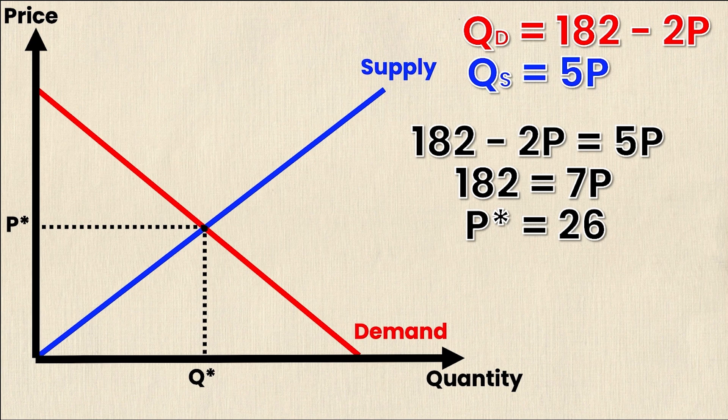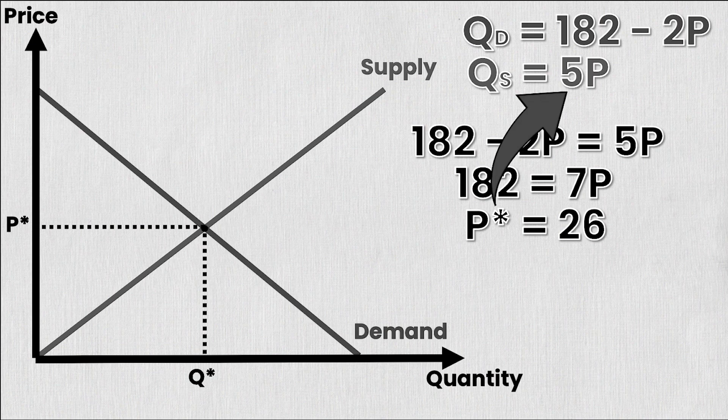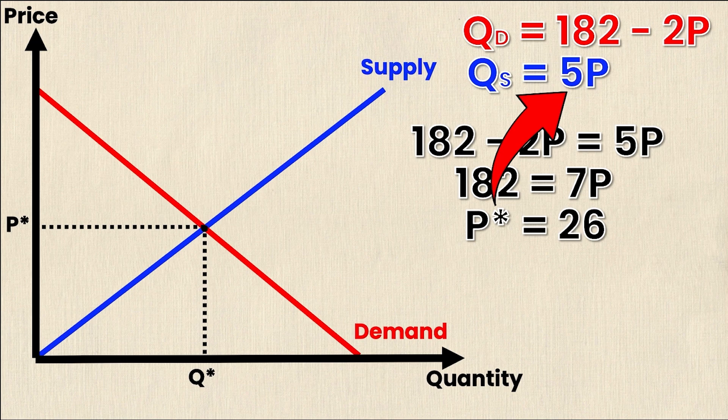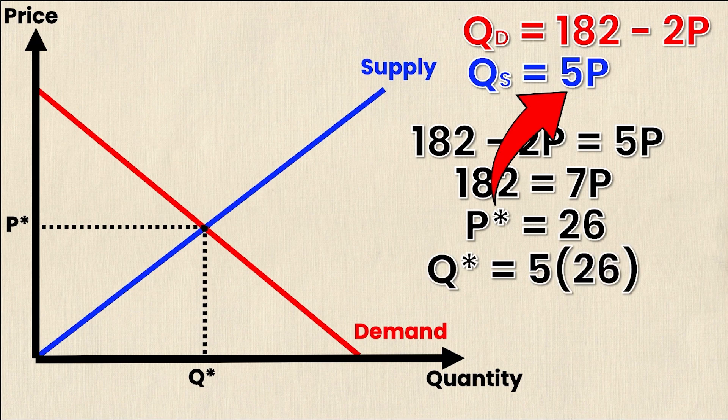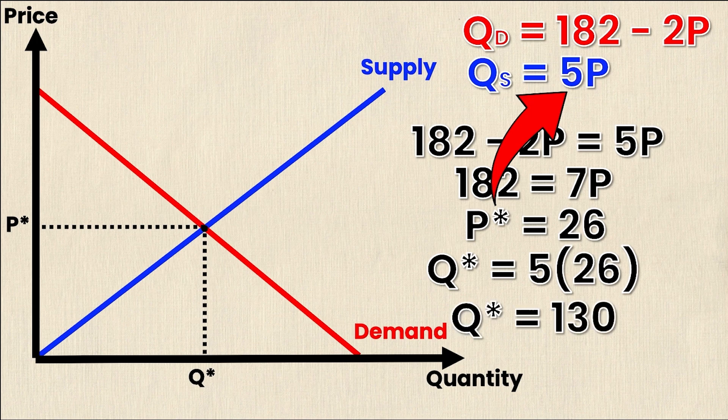And now I can take this P value and I can sub it into the quantity supplied equation right here. Now you might ask yourself why the quantity supplied why not the quantity demanded. Well fun fact it's going to be the exact same Q value no matter which equation I sub it into and I'm subbing it into the supply equation because it looks easier to deal with. So anyway I sub it into the supply equation QS equals 5P but now my P value is known so q-star my equilibrium quantity is equal to 5 times 26 which is simply 130.